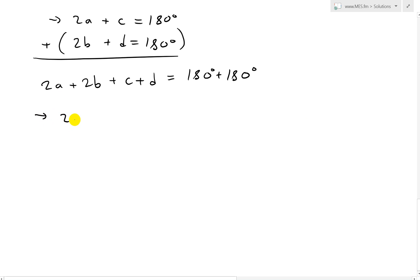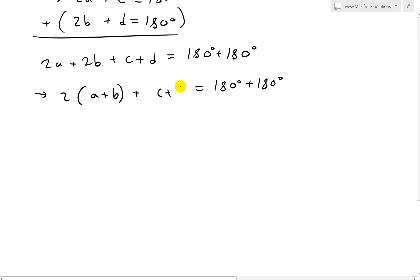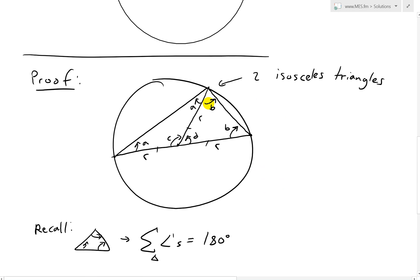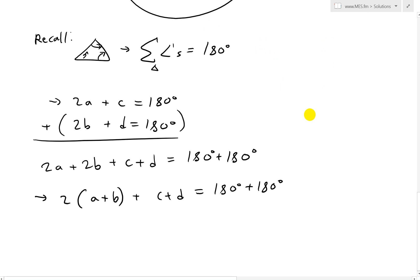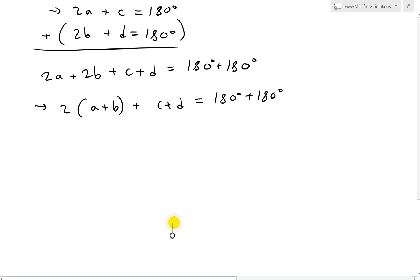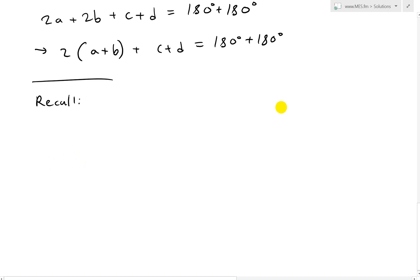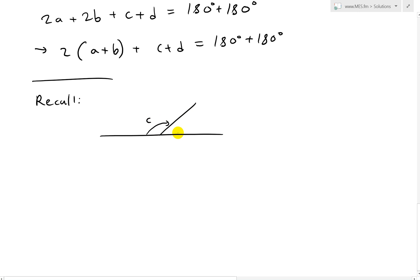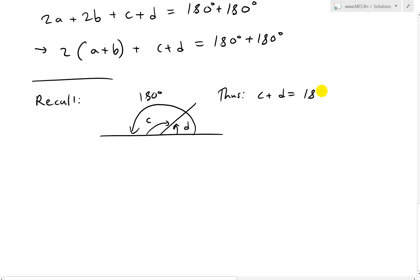We factor out the 2 and simplify to get 2 times (A plus B), plus C plus D, equals 180 plus 180. Now A plus B is this middle full angle. And C plus D — if we recall, we just have a flat line where C and D are the two angles on either side, so C plus D equals 180 degrees. That's just a flat line.